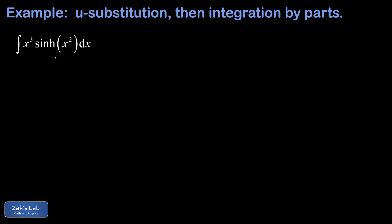The first thing that occurs to me with this integral is to substitute for the argument of the sinh function and call that u and then see what happens — we just want to simplify that argument. So we're going to let u equal x squared. We also have to transform the differential: du equals 2x dx. So if we can find a 2x dx in this integrand, we can replace that with du.